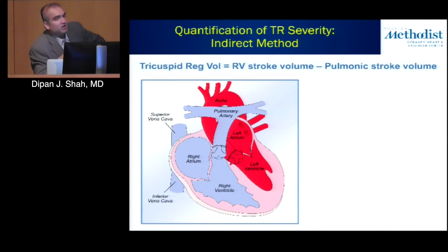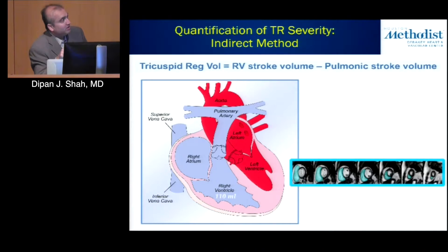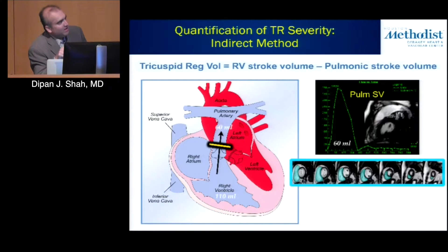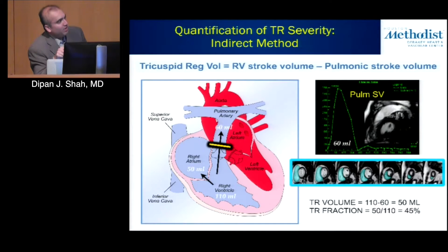To quantify tricuspid regurgitation severity, we use the indirect method: comparing the RV stroke volume from planimetry of end-diastolic and end-systolic volumes against the forward flow measured by phase contrast in the pulmonary artery. In this case, the RV stroke volume was 110 cc's and pulmonary artery flow was 60 mLs. Subtracting these, the regurgitant volume across the tricuspid valve was 50 mLs, giving a tricuspid regurgitant fraction of 45% (50 divided by 110).